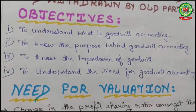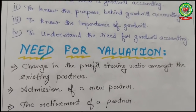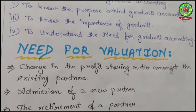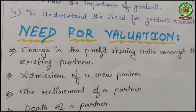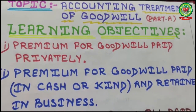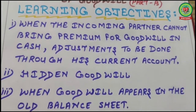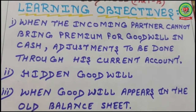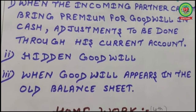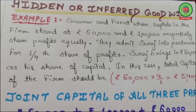The objectives are: to understand what is goodwill, to know the purpose and importance of goodwill, and to understand the need for valuation. Accounting treatment of goodwill is required when there is a change in profit sharing ratio among existing partners, admission of a new partner, retirement, or death. Today I continue with the remaining three points: first, when the incoming partner cannot bring premium for goodwill in cash; second, hidden goodwill; and third, when goodwill appears in the old balance sheet.